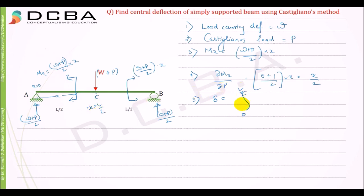So 0 to L by 2, and to take the entire beam, I'll just multiply it by 2. So it will be applicable for the total beam. MX is W plus P by 2 into X into X by 2. This one makes ∂/∂P into dX divided by EI.